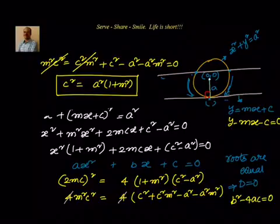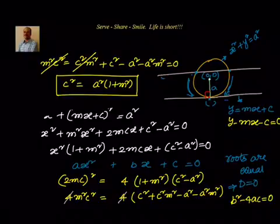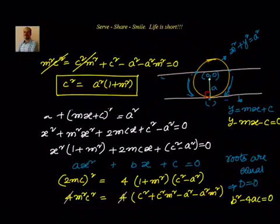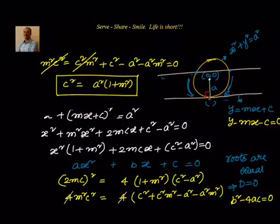Which is nothing but what we got earlier from the approach of finding the perpendicular distance from the center to the line y equal to mx plus c — the perpendicular distance is equal to a. So the key point in the second method is: x square plus y square equal to a square and y equal to mx plus c, when they share common points the line intersects the circle at two points. When these two points coincide to one point, the secant becomes a tangent. The roots of the quadratic are equal, so discriminant equal to 0. Substituting, we get c square equal to a square into 1 plus m square. That is the condition to be satisfied by the line y equal to mx plus c to be a tangent to x square plus y square equal to a square.